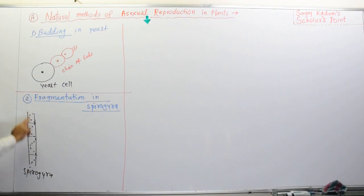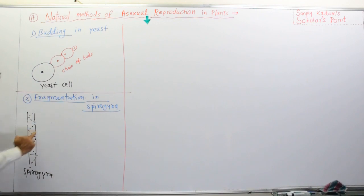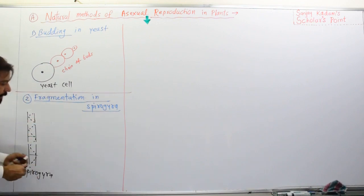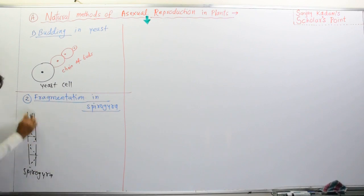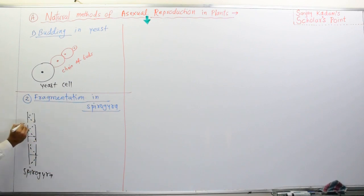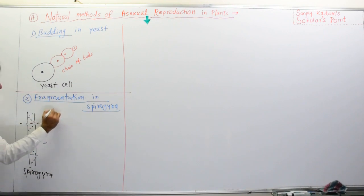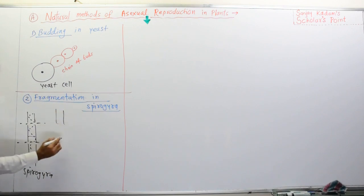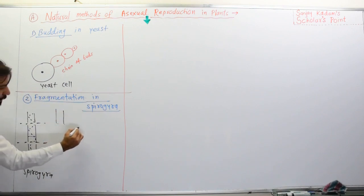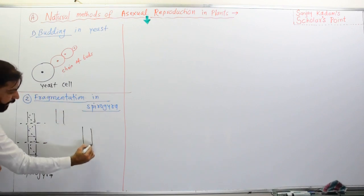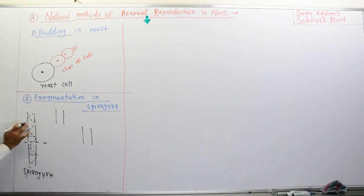The parent Spirogyra, because of some reasons, has its filament — the ribbon-like structure — broken down into two or many pieces. The parent Spirogyra breaks down here and again here, giving us one fragment, another fragment, and so on.